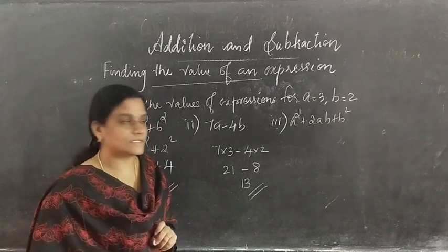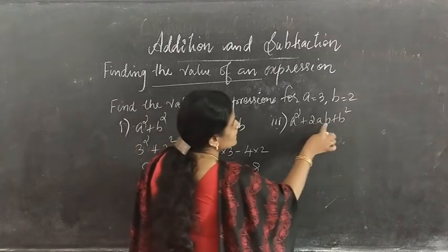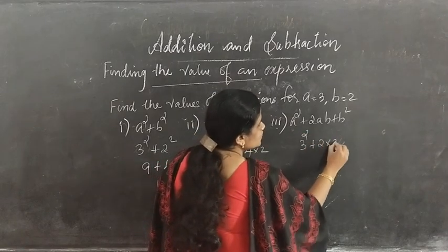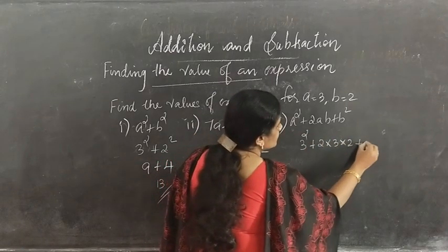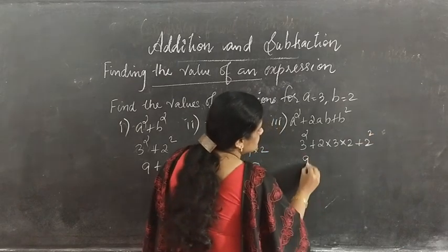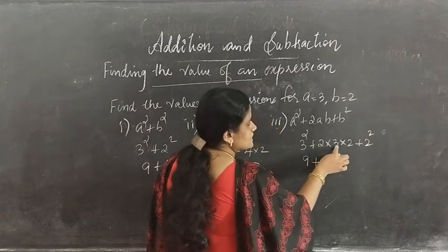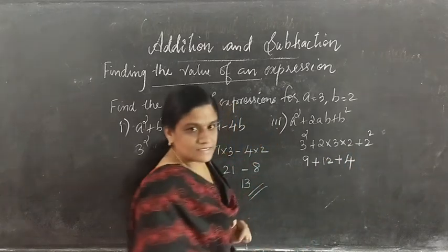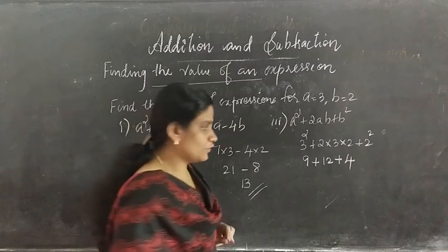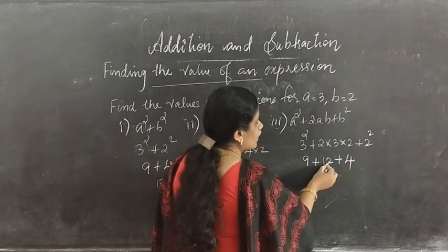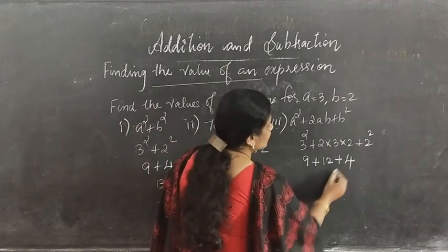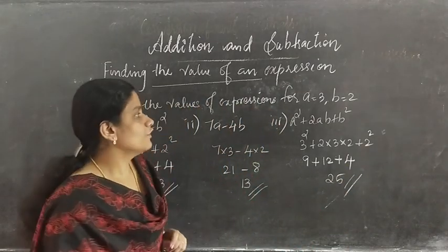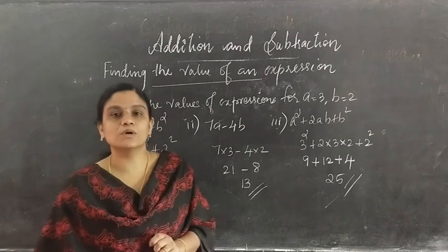Last expression: a² plus 2ab plus b². That is 3² plus 2 into 3 into 2 plus 2², which is 9 plus 12 plus 4. 9 plus 12 is 21, and 21 plus 4 gives 25. These are the values of the given expressions for a equal to 3 and b equal to 2.